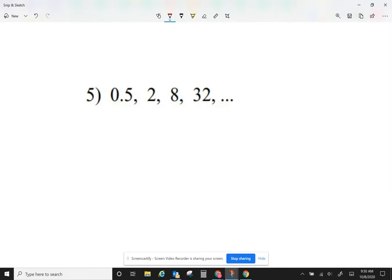Looking at question number 5. If I'm doing addition, or if I'm thinking of adding 0.5 to become 2, I have to add a decimal. But then, everything else is not a decimal. So, I'm just going to assume I'm not adding. So, let me try multiplication. In order for 0.5 to become 2 in multiplication, let me multiply this by 4. 2 times 4 gives me 8. So, that works. 8 times 4 gives me 32. So, that works. In order for me to come out with the next number, let me multiply it by 4. 32 times 4 happens to be 128.